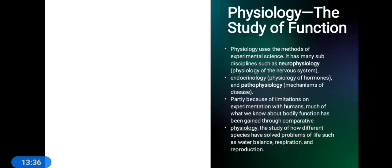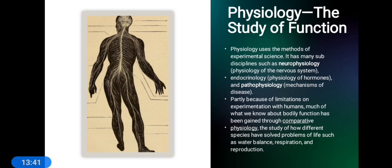Now let's talk about physiology — another important backbone of biology. Physiology is the study of function: what is the function of a certain body part. Physiology uses the methods of experimental science. It has many sub-disciplines such as neurophysiology (physiology of the nervous system), endocrinology (physiology of hormones), and pathophysiology (mechanism of diseases). Because the body has different types of structures, there must be different functions performed by each.